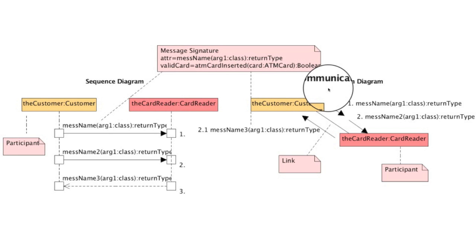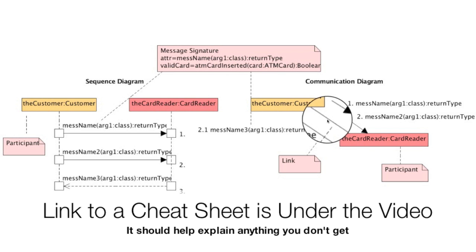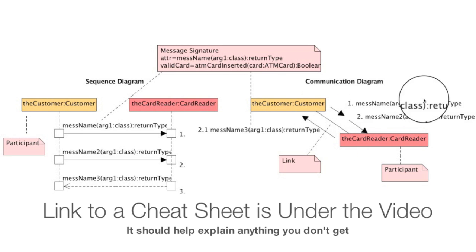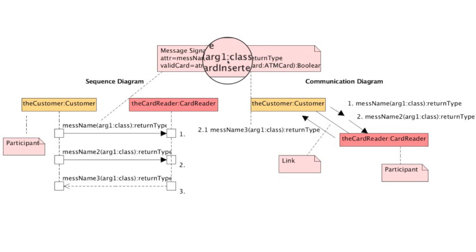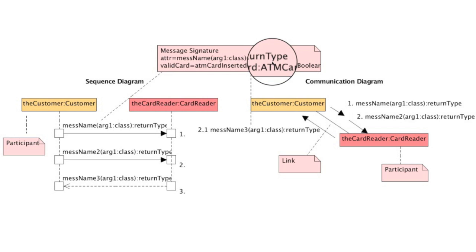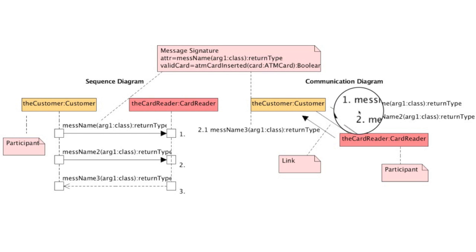A communication diagram is used to show links between participants, and it has four main parts: the participants (which are the same as in sequence diagrams), communication links (there are no lifelines — instead there are communication links that connect the different participants that interact), the messages that are going to be passed (which have the same main format as a sequence diagram: message name or method name, any arguments followed by their class separated by a colon, then another colon and the return type), and the fourth part — often disregarded — is the number, which labels how all of these different participants and their messages are going to interact.